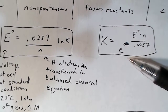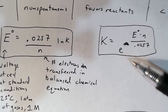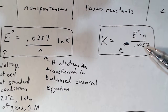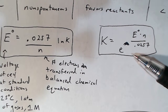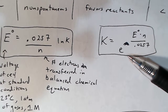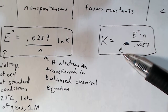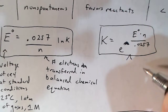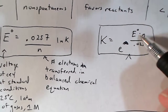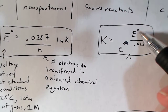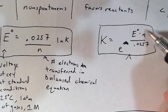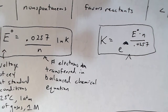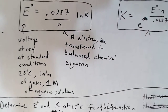After we do 0.0257 divided by N, we multiply by ln of K. You can also manipulate that equation to get the equilibrium constant by knowing the voltage of the cell and N, the number of moles of electrons in the balanced chemical equation. You get K by taking e to the power of the voltage of the cell times N over 0.0257.